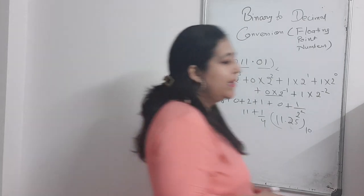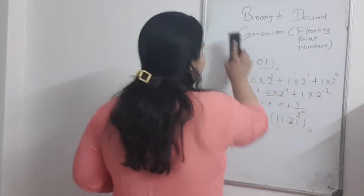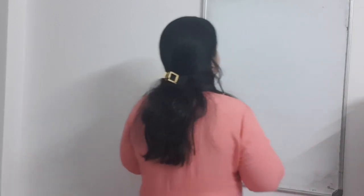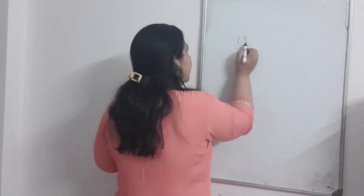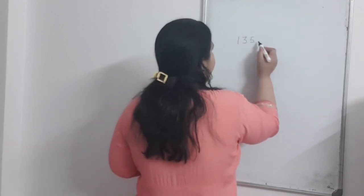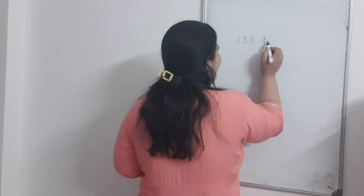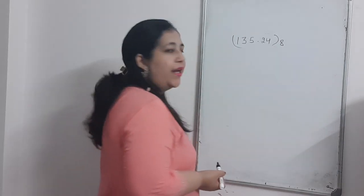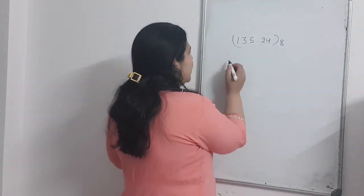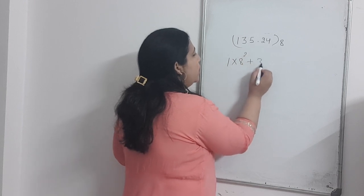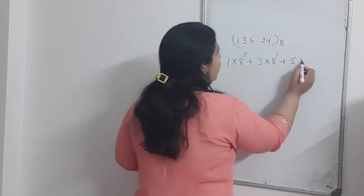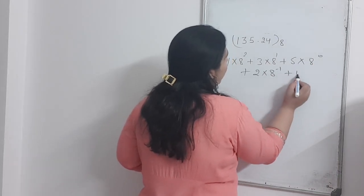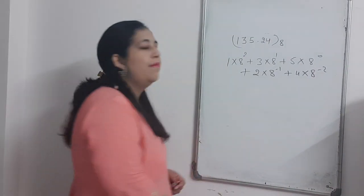This was binary to decimal. Now, if you have an octal number, the method is the same. For example, take the octal number 135.24. You calculate: 1 into 8 raised to the power 2, plus 3 into 8 raised to the power 1, plus 5 into 8 raised to the power 0, plus 2 into 8 raised to the power minus 1, plus 4 into 8 raised to the power minus 2.